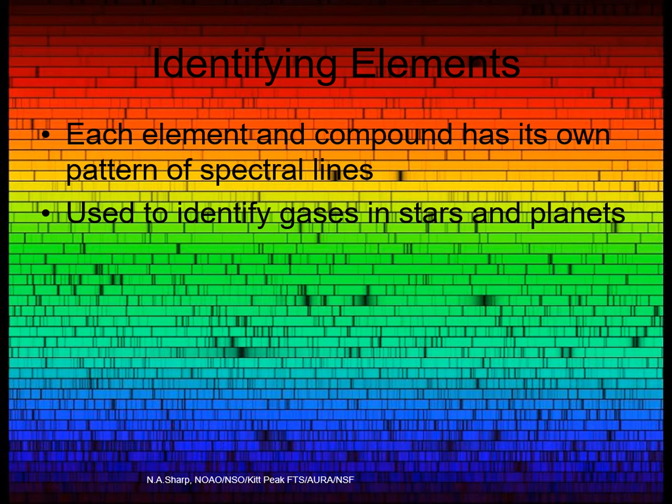The modern science of astrophysics became possible from this. For example, back in the first chapter, we mentioned that Cecilia Payne-Gaposhkin was able to figure out what stars were made out of by studying their light. She did this by studying the spectra of stars.